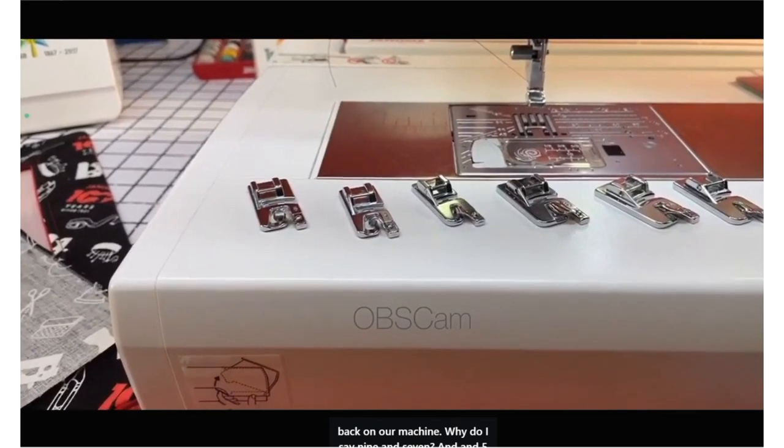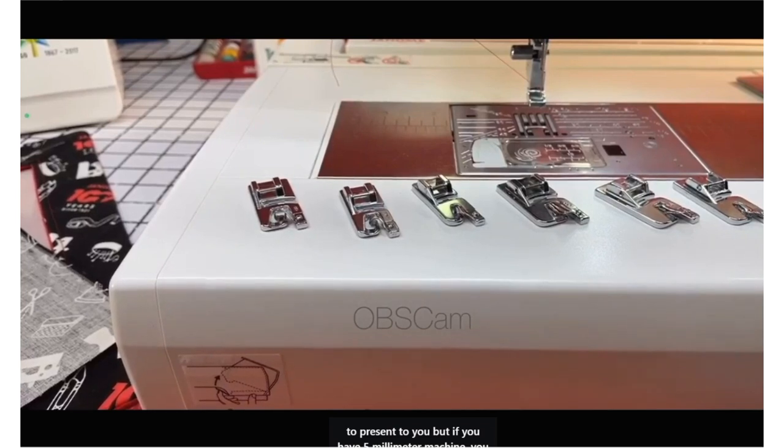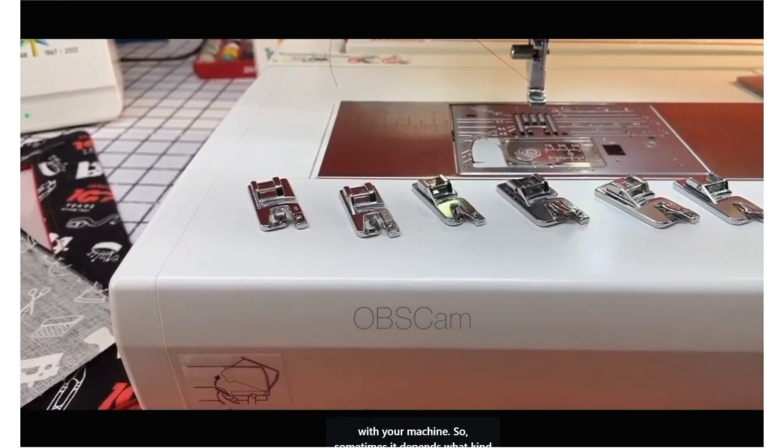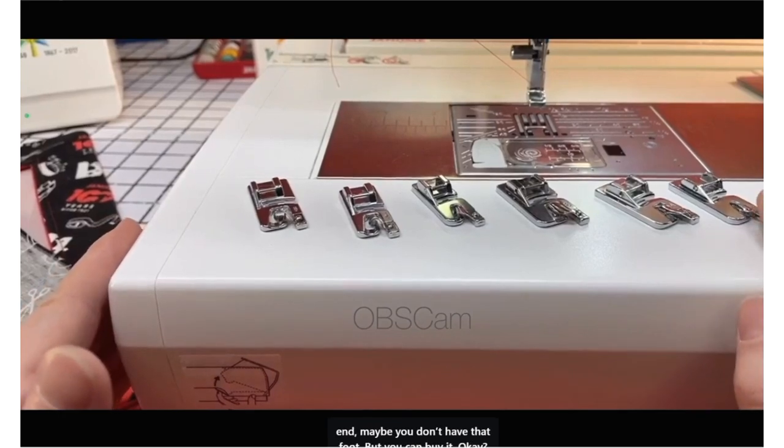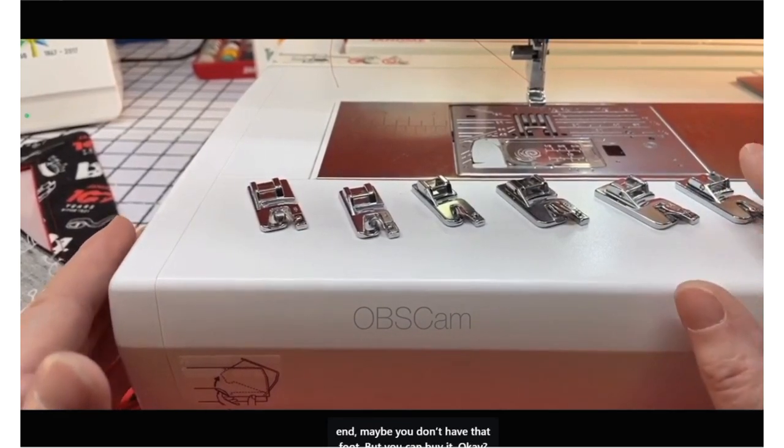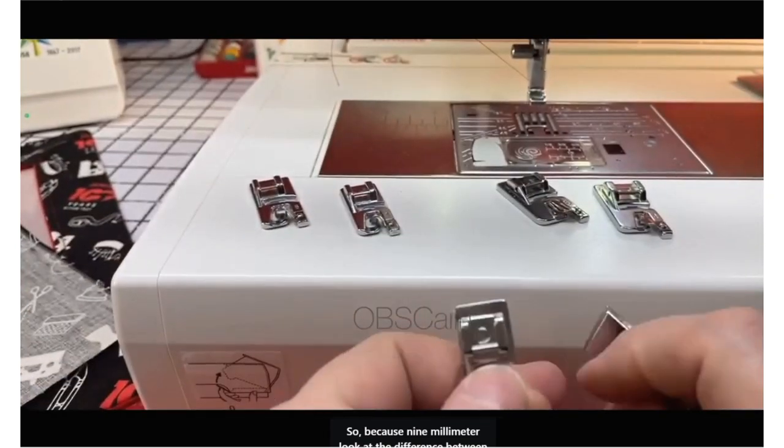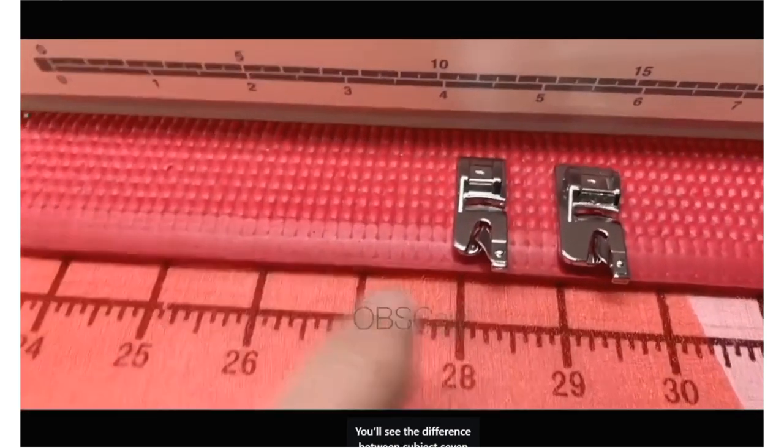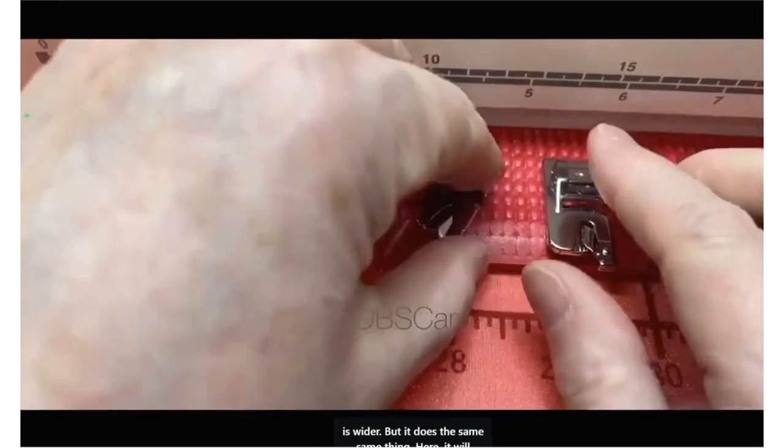Back on our machine. Why do I say 9 and 7 and 5mm? If you have a 5mm machine, you can do it too. To do it perfectly, you need the foot that goes with your machine. Sometimes, depending on what kind of machine you bought, maybe you don't have that foot, but you can buy it. Look at the difference between the two.